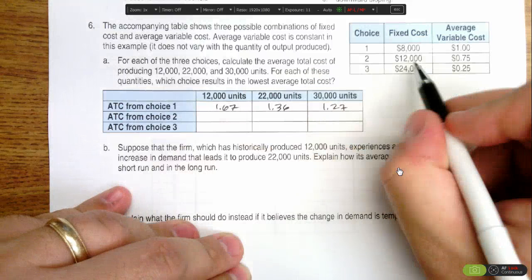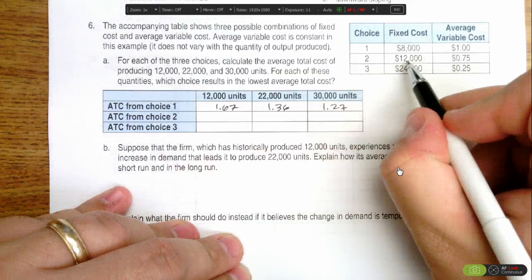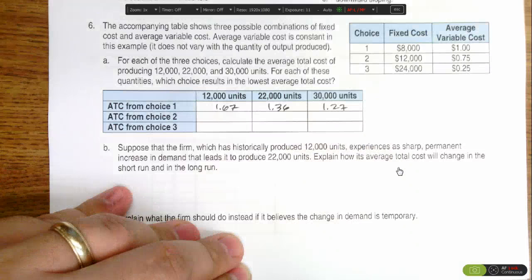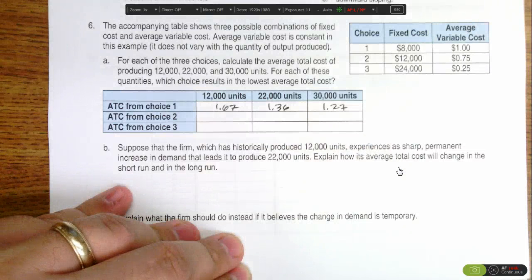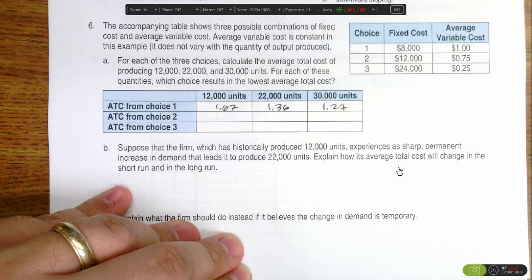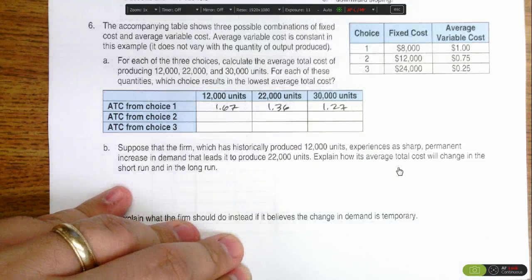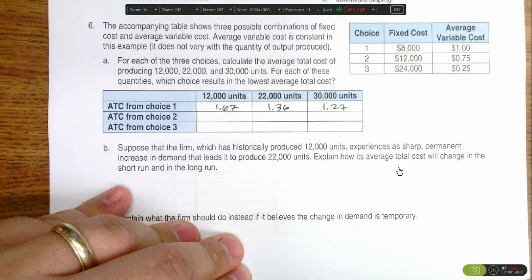For choice two, it's the same process: $12,000 in fixed costs plus 12,000 units times 75 cents, which is the average variable cost. We add those together—we get 9,000 in variable costs plus 12,000 in fixed is $21,000 total. Divided by 12,000 units gets me $1.75 on average.